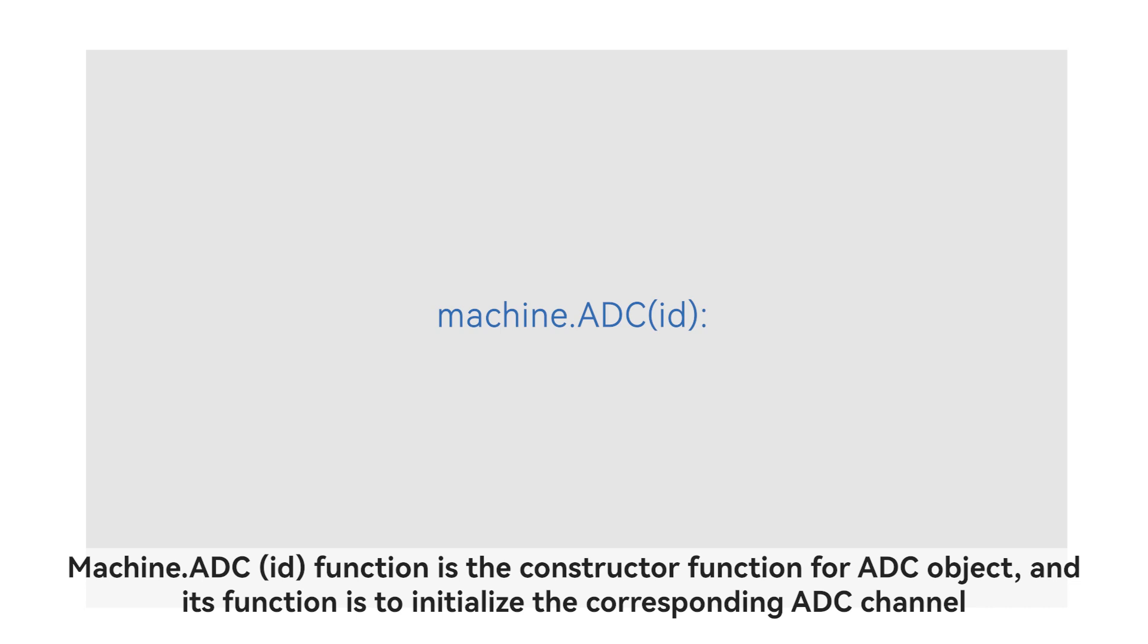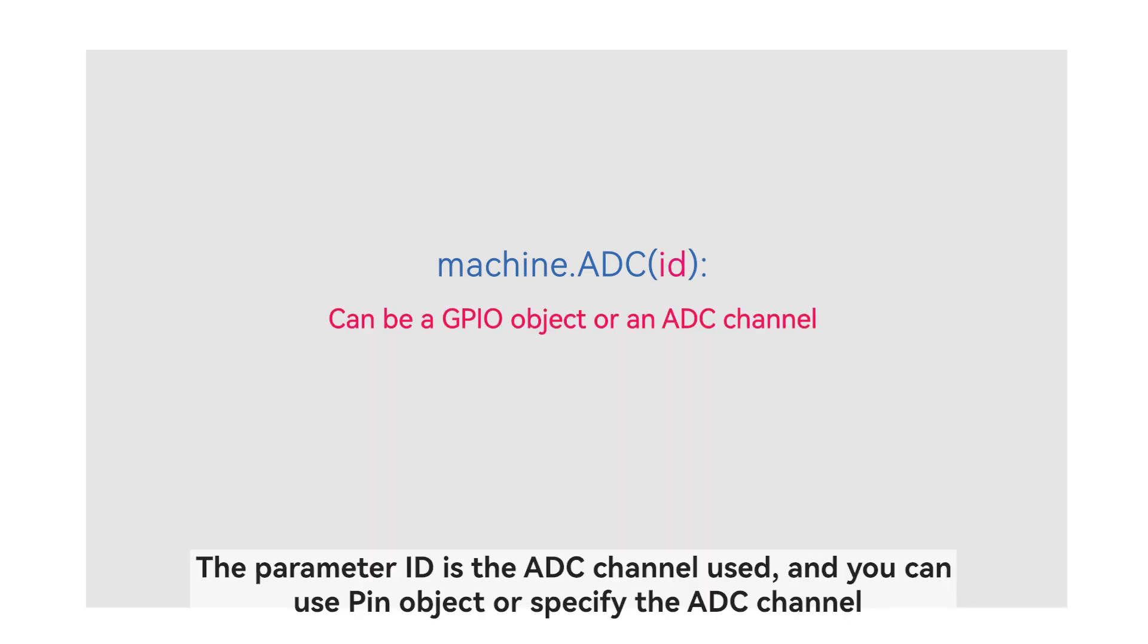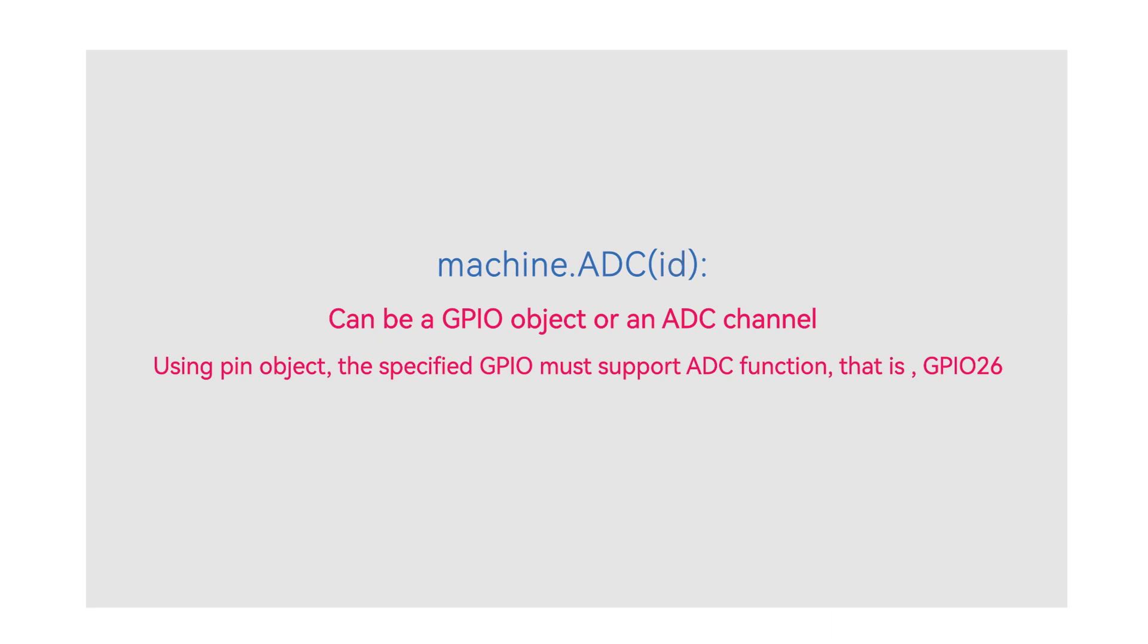Now let's enter the function description part. Machine.ADC function is the constructor function for ADC object, and its function is to initialize the corresponding ADC channel. The parameter ID is the ADC channel used, and you can use pin object or specify the ADC channel. When using pin object, the specified GPIO must support ADC function, that is, GPIO 26-29. When using the specified ADC channel, channel 0 to 3 corresponds to GPIO 26 to 29. Channel 4 corresponds to the internal temperature sensor.